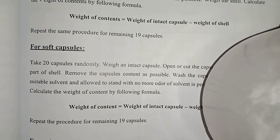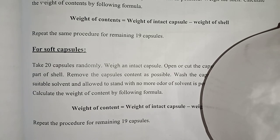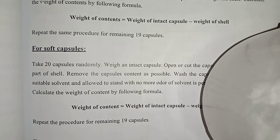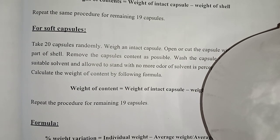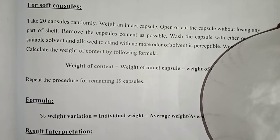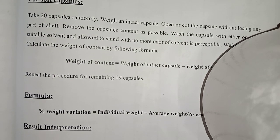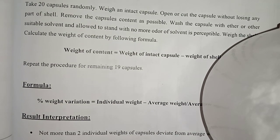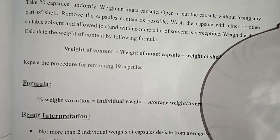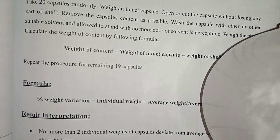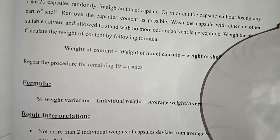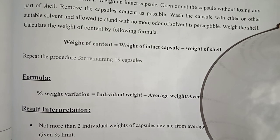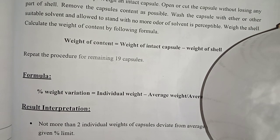For soft capsules, take 20 capsules randomly. Cut each capsule carefully without losing any part of the shell. Remove the content, then wash the empty shell with ether or another suitable solvent. Wash it properly, allow the solvent to evaporate, and then calculate the weight of the shell.